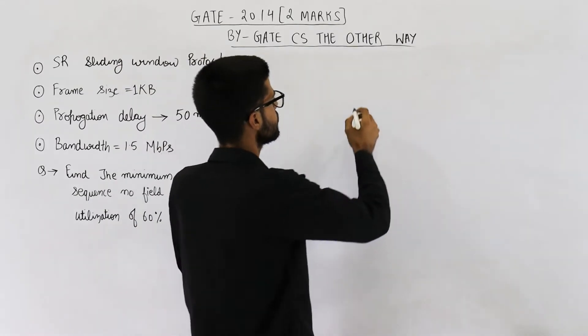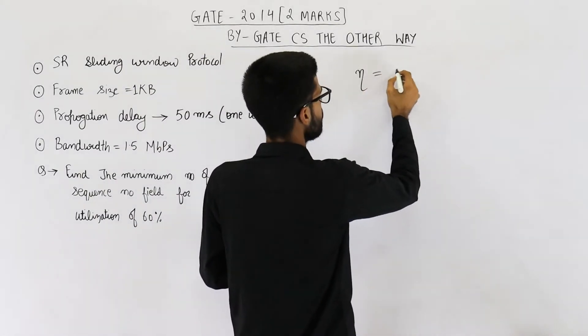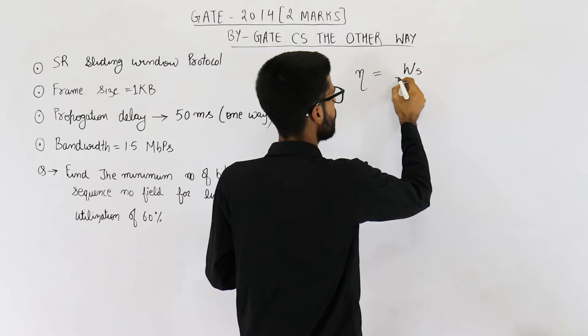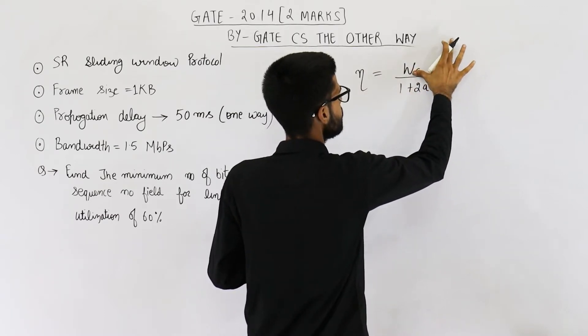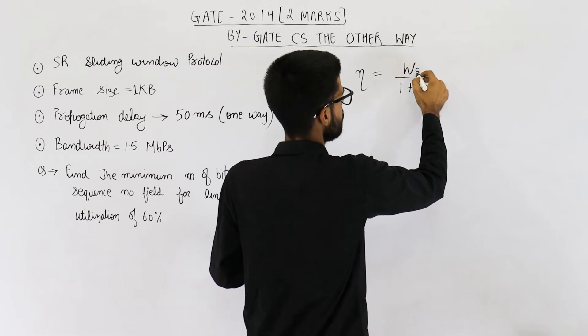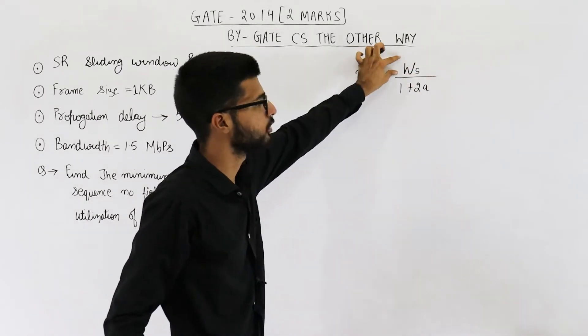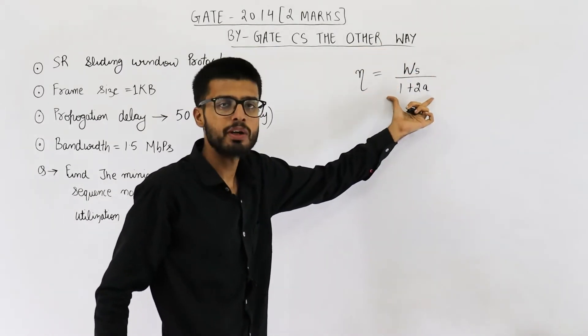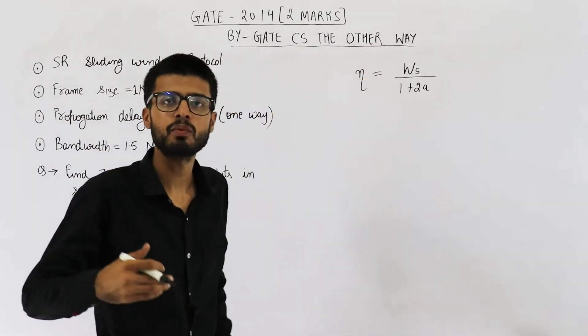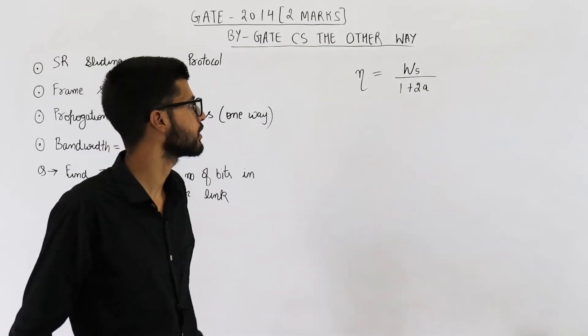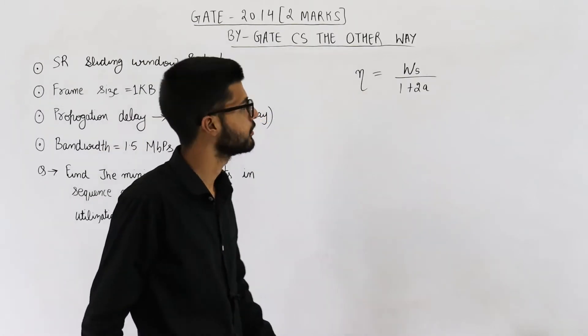The formula for efficiency is sender window size divided by 1 plus 2a. See, sender window size means what we are actually sending. 1 plus 2a means what we can send in best case. So what we are actually sending divided by what we can possibly send in the best case will give you efficiency.